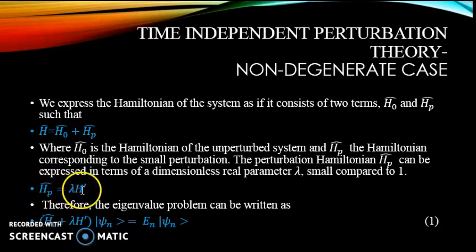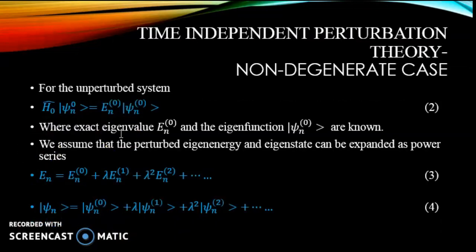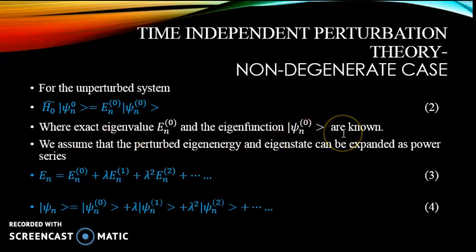Hp equals lambda times H', therefore the eigenvalue problem can be written as (H0 + lambda H') psi_n = E_n psi_n. For the unperturbed system we have H0 psi_n0 = E_n0 psi_n0, where the exact eigenvalue E_n0 and the eigenfunction psi_n0 are known.